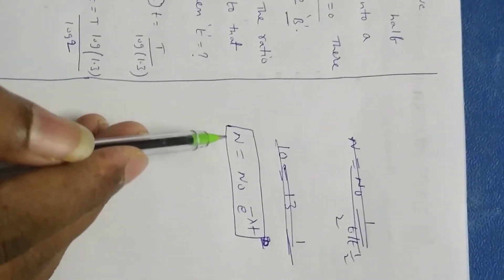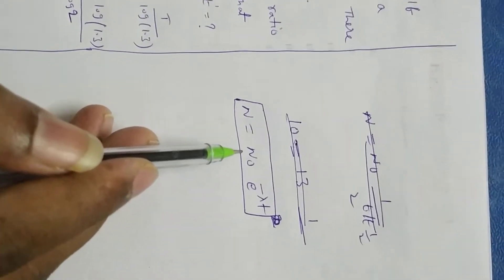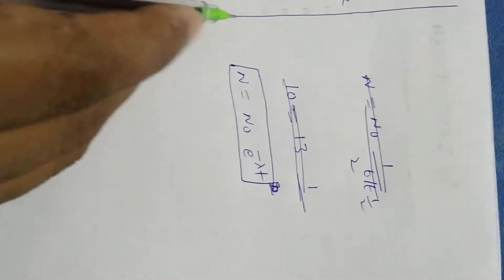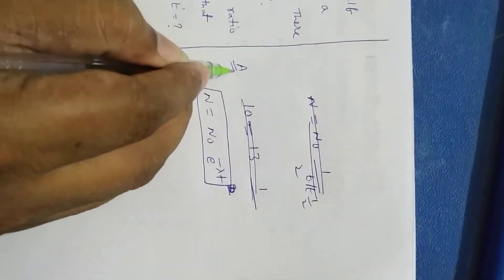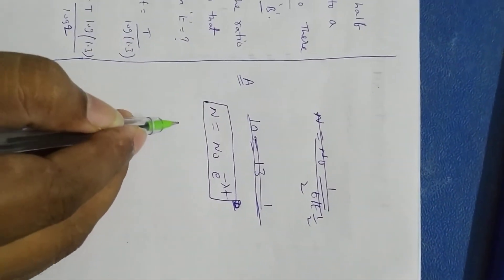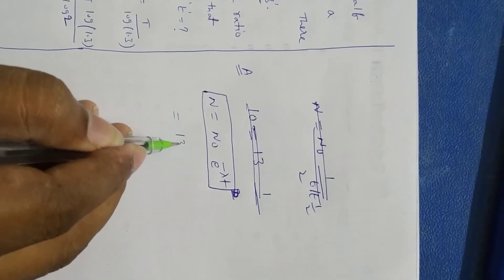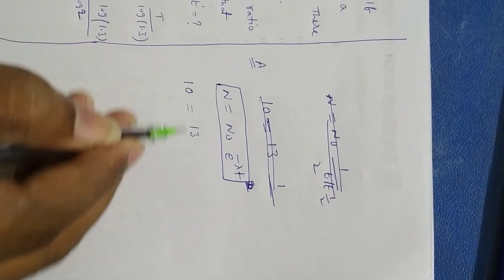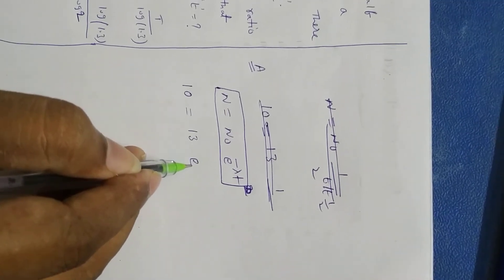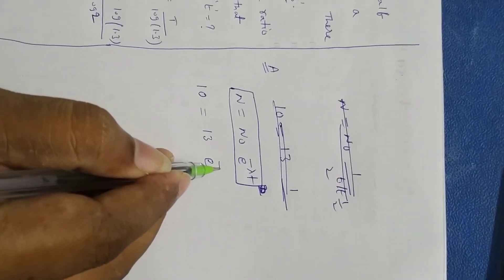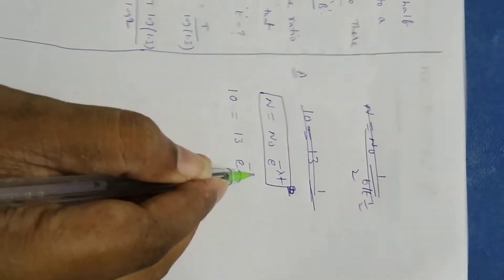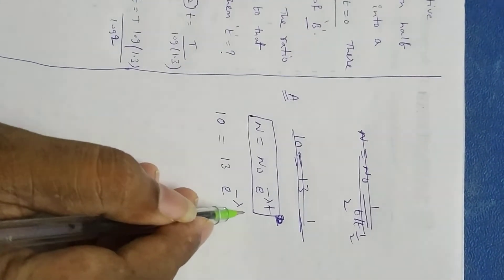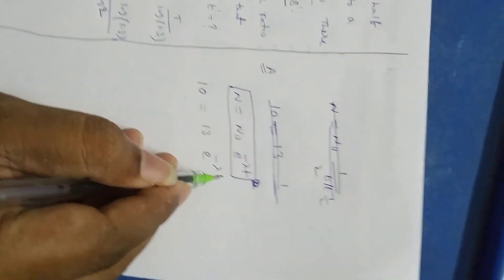What is the formula for n naught e power minus lambda t? I take the substance name as A. Initially, A is 13. Finally, A is 10 - 10 number of atoms - e power minus lambda into t. Here t will be calculated.